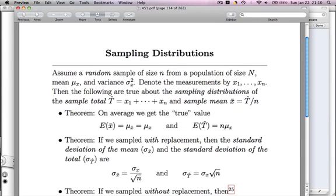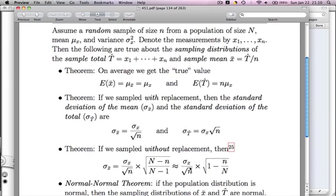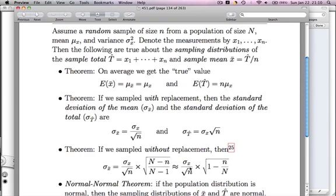Theorem: If you sample without replacement, then there's a correction factor. I don't hold you responsible for this sampling without replacement. I don't think it's that important. It doesn't come up that often in the work that you're likely doing. One thing to note is that it's the same as the previous theorem, but there's a correction factor: one minus little n over big N.